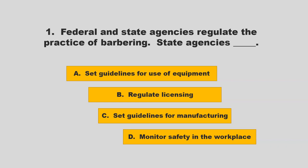Federal and state agencies regulate the practice of barbering. State agencies set guidelines for use of equipment, regulate licensing, set guidelines for manufacturing, and monitor safety in the workplace. The correct answer is B: regulate licensing.